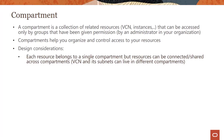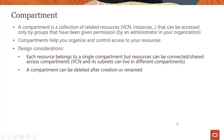Each resource belongs to a single compartment - you cannot have a resource living in two compartments. It's a logical place where the resource lives. However, resources can be connected and shared across compartments. For example, a VCN and a subnet, which is a component of the VCN, can actually live in different compartments - that's completely supported.